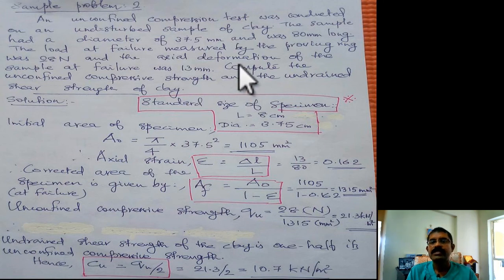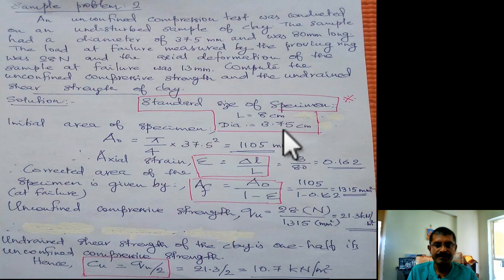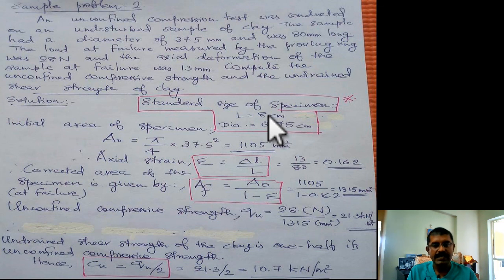The standard size of test specimen is 8 centimeter by 3.75 centimeter. That is 3.75 centimeter is diameter and 8 centimeter is length. This is the standard dimension of the test sample for unconfined compression test. That is the case with triaxial test also.